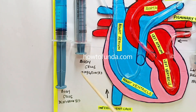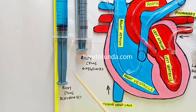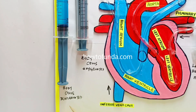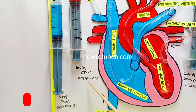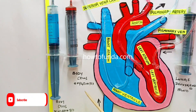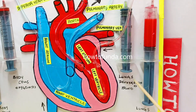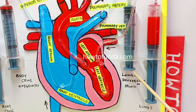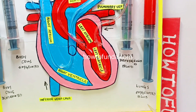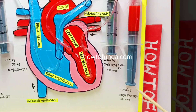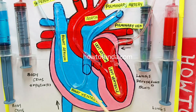The left side syringes are depicted as follows: one syringe is for the body with deoxygenated blood and another one for the body with oxygenated blood. On the right side, similarly, one syringe is depicted for lungs with deoxygenated blood and another one for lungs with oxygenated blood.